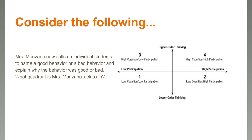Next scenario: Mrs. Monsana calls on individual students to name a good or bad behavior and explain why. Those of you that said quadrant three are correct. In this activity, only the students who are participating are benefiting — those sitting quietly are not benefiting. So it's still higher-order thinking, but we don't have all students participating.